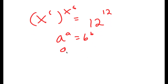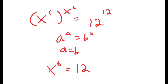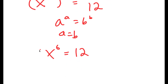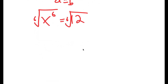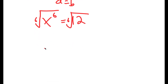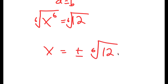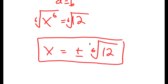Now we have the a to the power of a equals b to the power of b form, because both bases and exponents are the same. This means x to the power of 6 is equal to 12. Taking the sixth root on both sides, we get x is equal to positive or negative the sixth root of 12. So this is the answer.